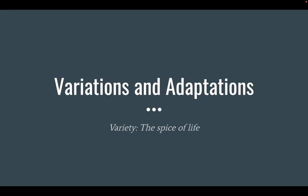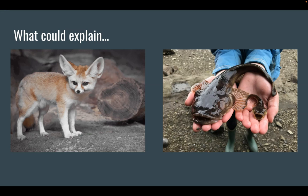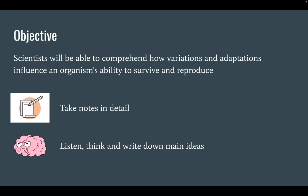Variations and Adaptations. By the end of this video, you'll have a good explanation for why the adorable fennec fox on the left has such large ears, and why the midshipman fish — both males in the picture on the right — are such different sizes. Your objective will be to comprehend how variations and adaptations influence an organism's ability to survive and reproduce.